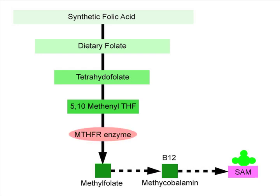Notice that the enzyme MTHFR is located right before the final folate conversion. If you have a mutation in this enzyme, this will lower the amount of methylfolate produced. As you can see, a mutation in the MTHFR gene will have a negative impact on methylation.